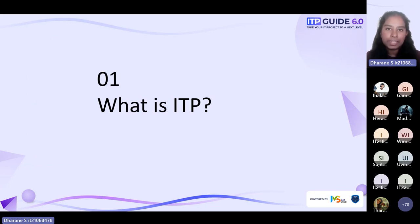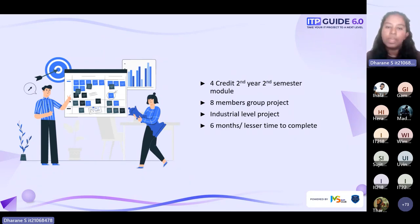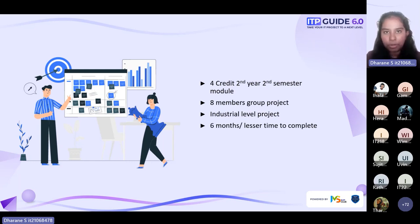Moving on — what is ITP? ITP is a four-credit second-year second-semester module. It is actually a project. In the previous semesters, you had projects, but they were part of the module. But here, this project will be the entire module. So with that, you have to understand the importance and the weightage of it.